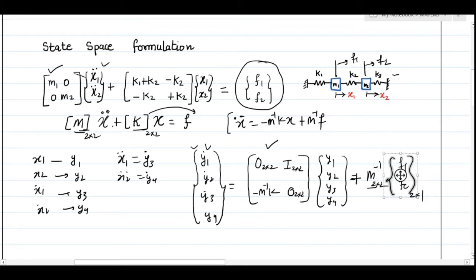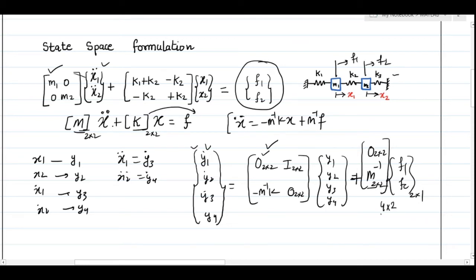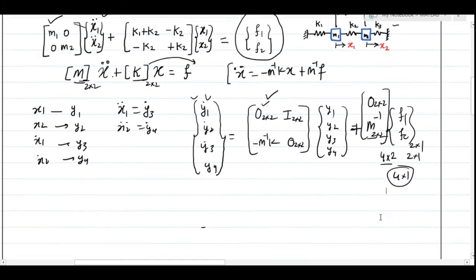Since M is 2×2 and F is 2×1, this term is 2×2, but the coefficient matrix is 4×4, so we need to convert the force input accordingly. We prepend a 2×2 null matrix to get a 4×2 matrix, and multiplying by the 2×1 force vector gives a 4×1 result. This is the derivative term on the left-hand side, written as y-derivative.